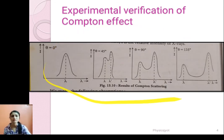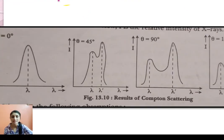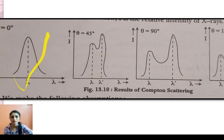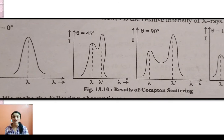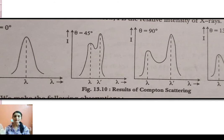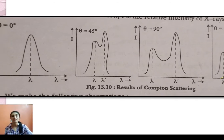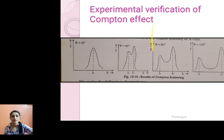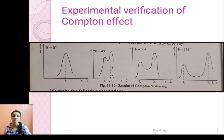These are the figures which we get. For theta equals zero, there is no lambda dash but we get only lambda, that is the wavelength which is same as that of the incident radiation. When the angle of scattering is 45 degrees, the shift between lambda and lambda dash is small. When theta equals 90 degrees, the difference goes on increasing, and for 135 degrees it is more. So this is the result of Compton scattering.